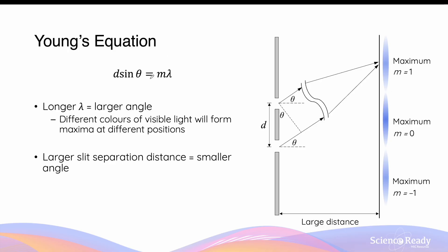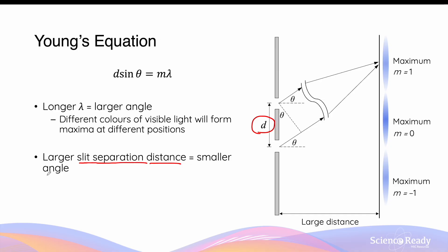Young's double slit equation, D sin theta equals M lambda, can be used to analyse the diffraction pattern of light when it passes through two slits. From this equation, we can study the relationships between variables. For example, a longer wavelength of monochromatic light gives a greater angle for each maximum observed on the screen — meaning different colours of visible light, because they have different wavelengths, will form maxima at different positions. Additionally, sin theta is inversely proportional to the distance D: a larger slit separation distance gives a smaller angle at which the maximum will occur, and vice versa.